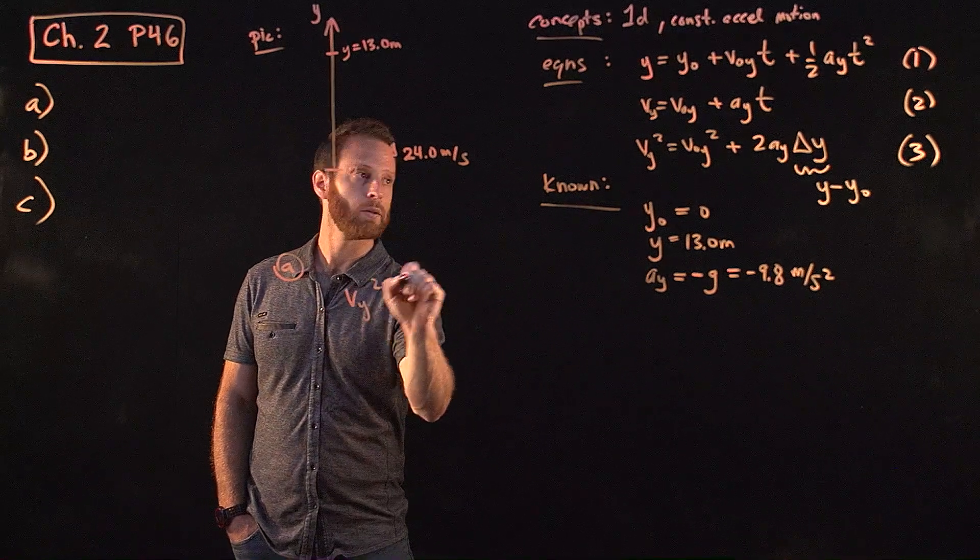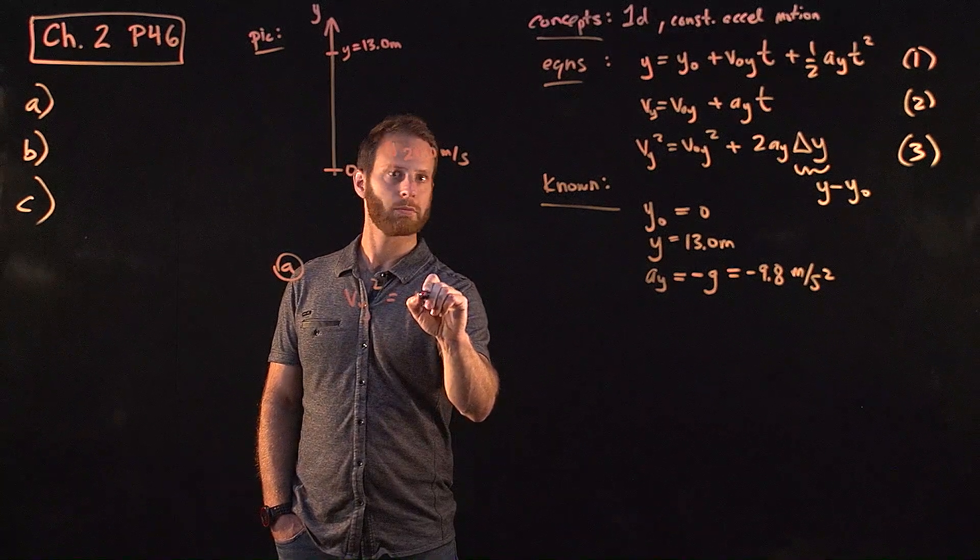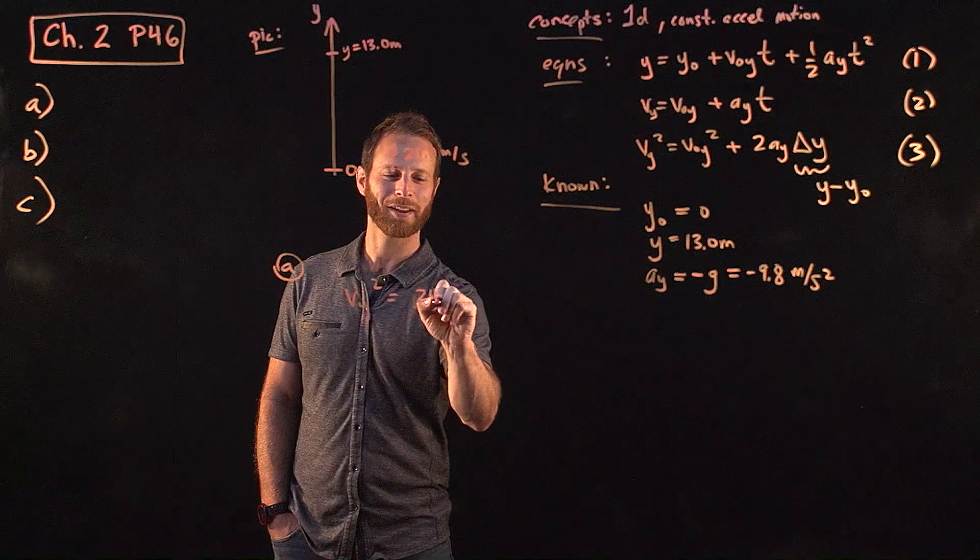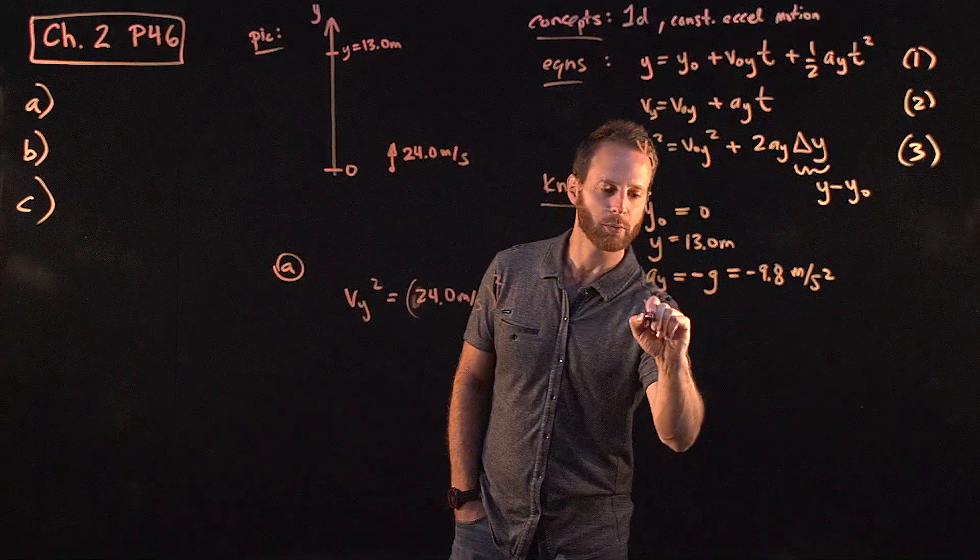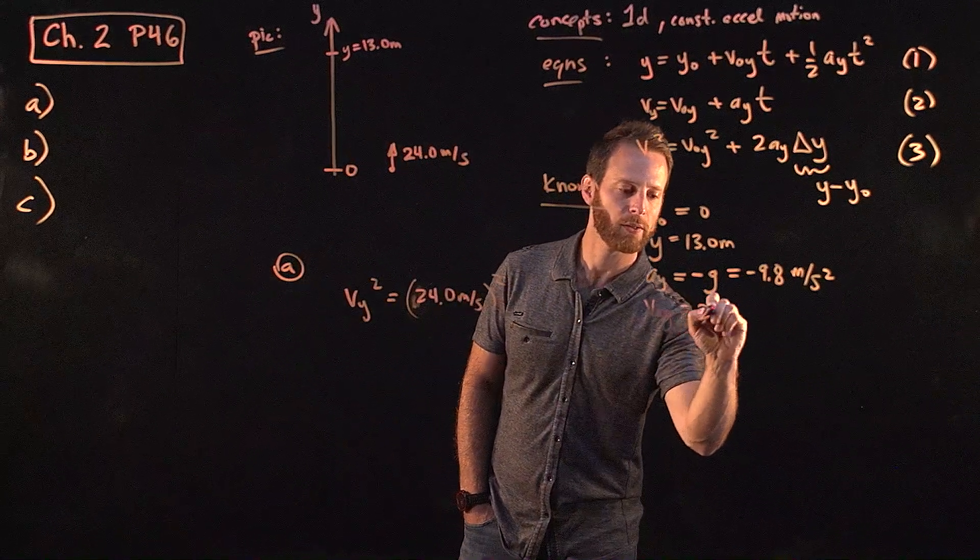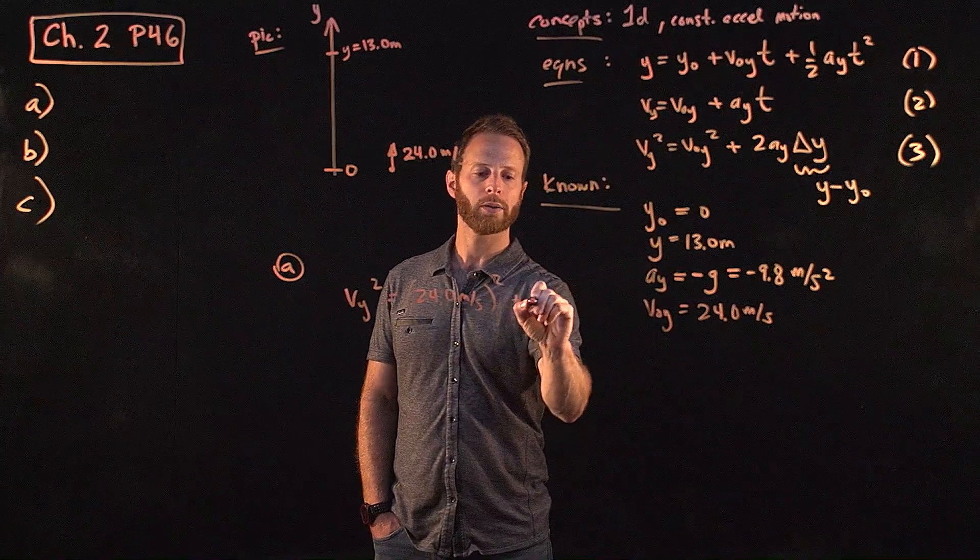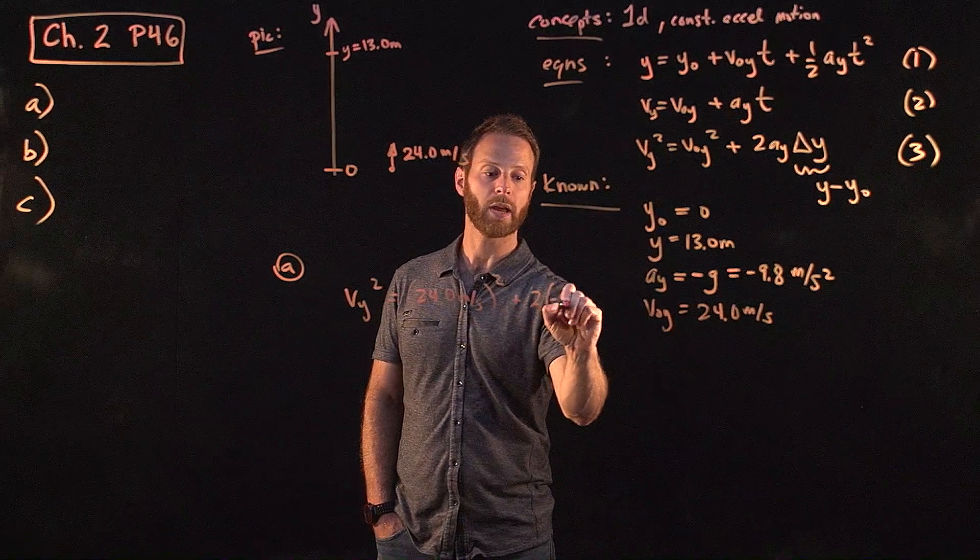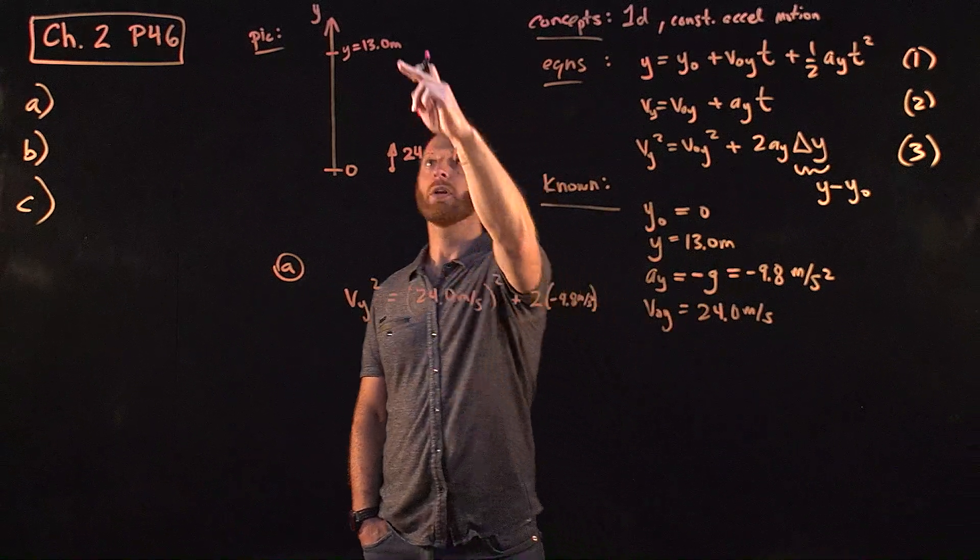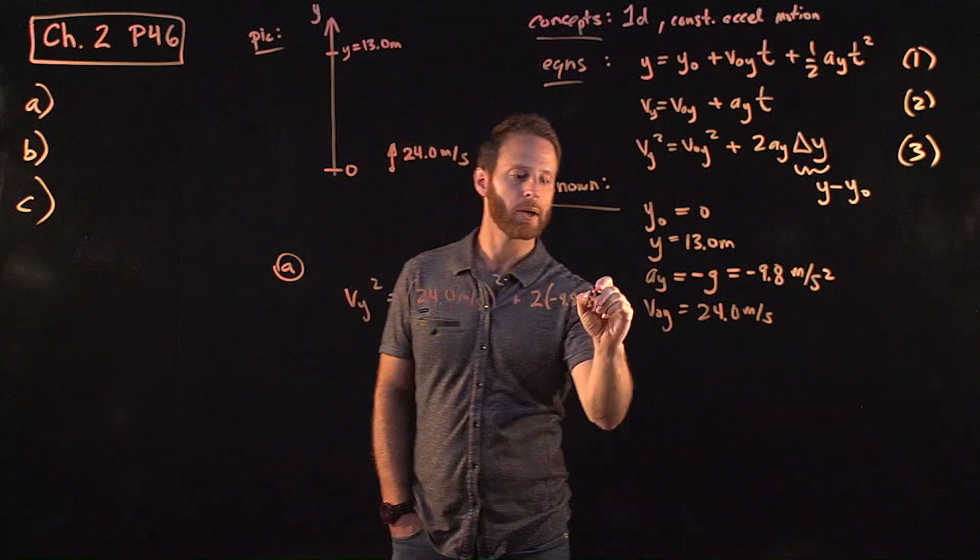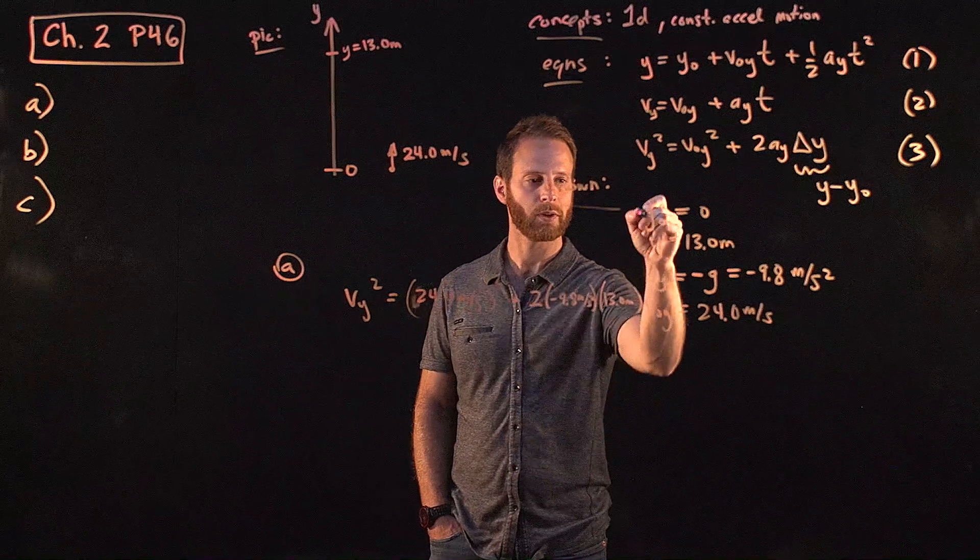We can write Vy squared equal to the initial velocity of 24 meters per second squared. Of course, that should have been on my list of knowns. That's squared plus 2AY, 2 times a minus 9.8 meters per second squared. And the delta Y, which is Y final minus Y initial, which is 13.0 meters. Okay. Sorry about that.